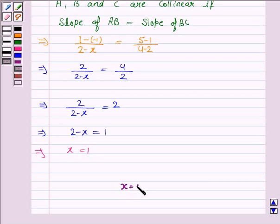Hence, the answer is x is equal to 1. So, for x is equal to 1, the points A, B and C will be collinear. So, this completes the question. Hope you enjoyed this session. Goodbye and take care.